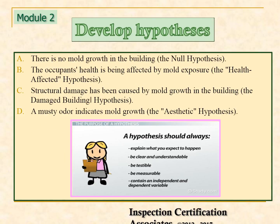Now the inspector can proceed to develop a hypothesis. There are four possibilities: there is no mold growth in the building — the null hypothesis; the occupant's health is being affected by mold exposure — the health-affected hypothesis; structural damage has been caused by mold growth in the building — the damaged building hypothesis; and a musty odor indicates mold growth — the aesthetic hypothesis.